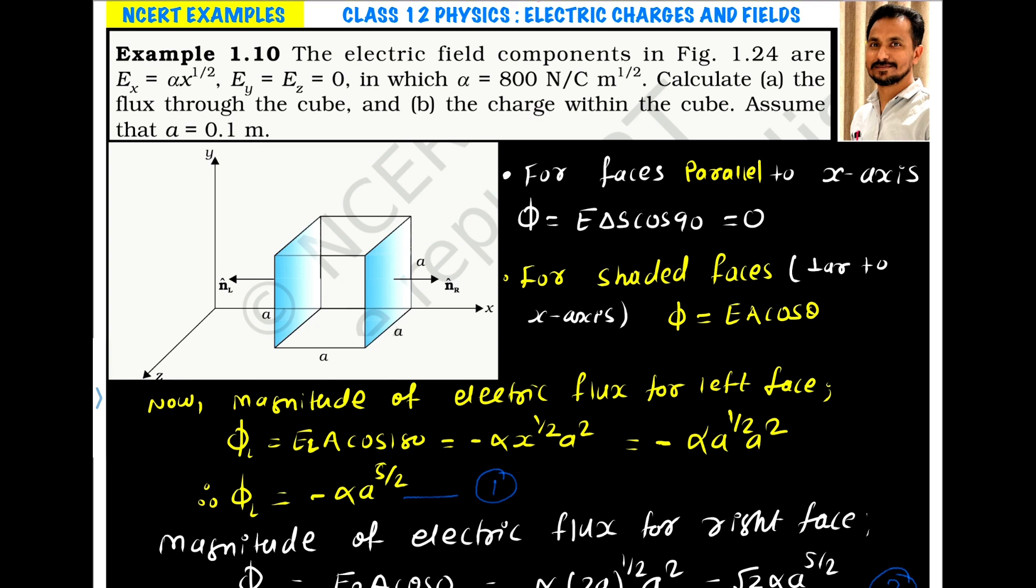Calculate the flux through the cube, and part B is the charge within the cube. Assume that a = 0.1 meter. As per the question, the electric field only exists in x direction and it is not uniform. It is a non-uniform field.